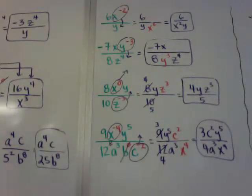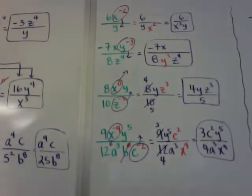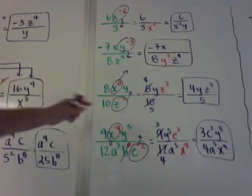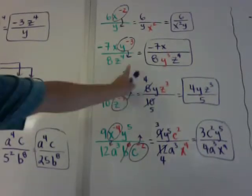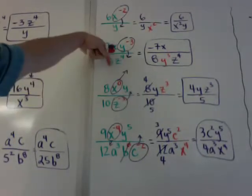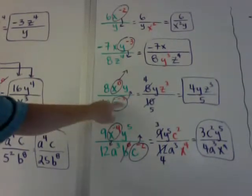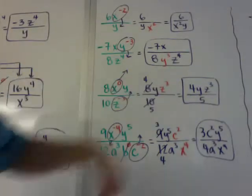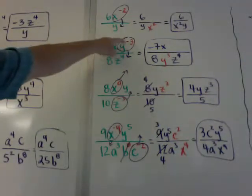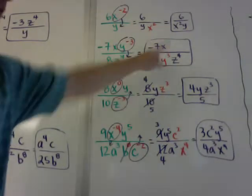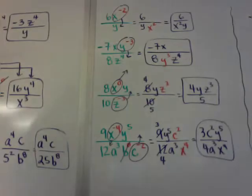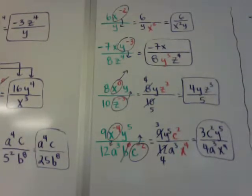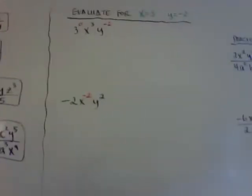I gave you a lot of examples so you can see all the different types. You can move exponents up or you can move them down. Negative on the bottom becomes positive on the top. Negative on the top becomes positive on the bottom. Just think upstairs, downstairs.